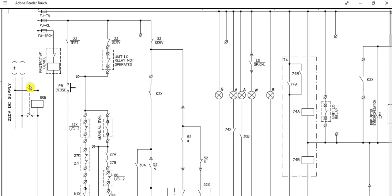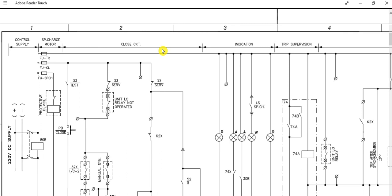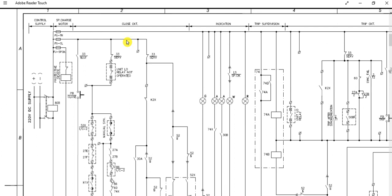Next is the closing circuit, which is one of the most important features of a circuit breaker. This is for an 11kV or 6.6kV circuit breaker — this is the typical basic engineering diagram. Any vendor or panel supplier can customize it based on the features available inside their breaker.